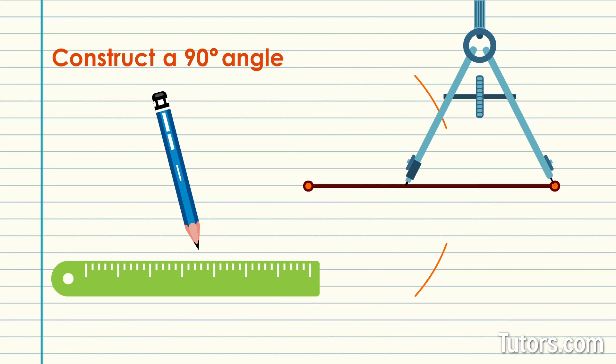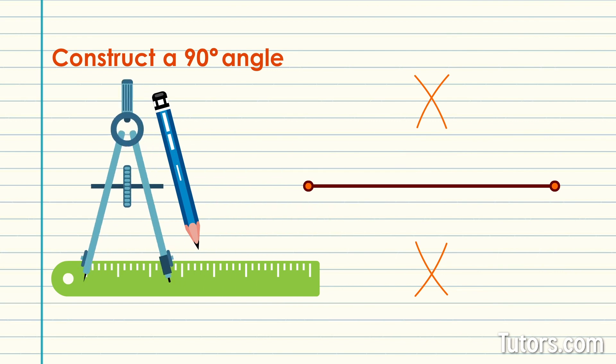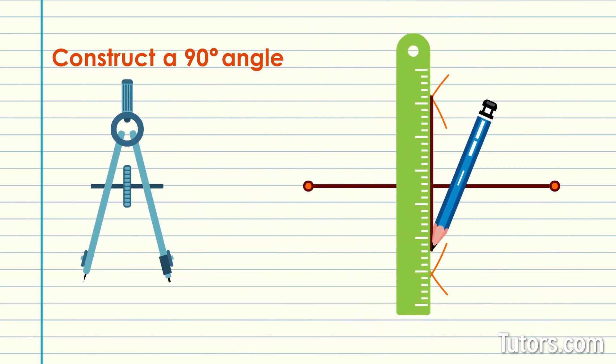Without changing the compass, relocate it to the other end point. Swing another arc above and below the line segment. The two arcs should cross above and below the line segment.